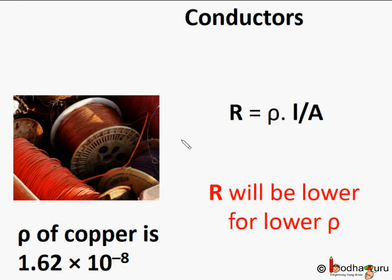Materials with low resistivity are good conductors. If we take two wires of the same length and cross section, the resistance R will be lower for the wire made of a material with low electrical resistivity, that is a lower value of rho. Copper has very low resistivity of 1.62 × 10⁻⁸ ohm meter, and hence gives lower resistance, making it an excellent conductor. Very less resistance is offered to the electric current, and hence copper is commonly used in electrical wires.